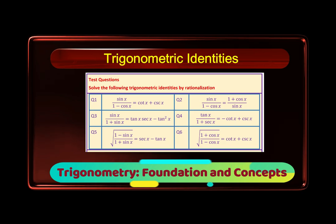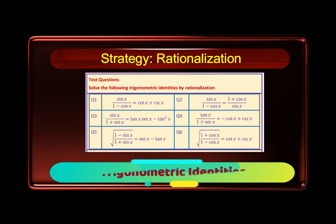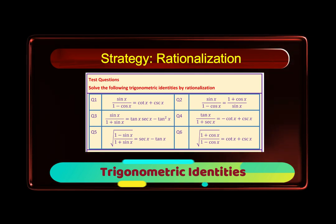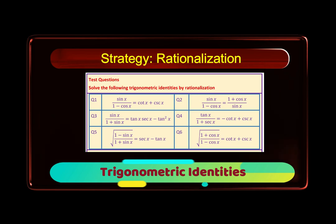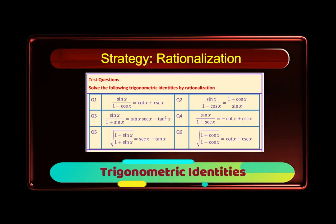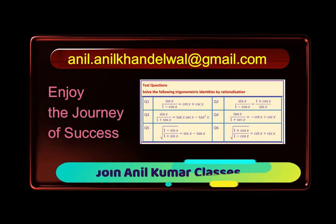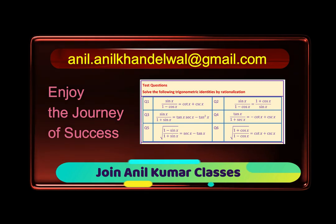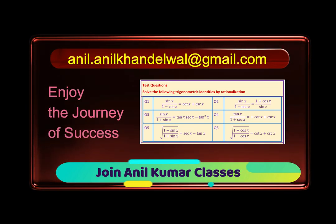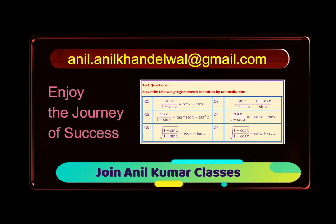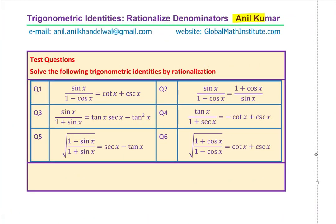Welcome to a very important series on proving trigonometric identities. We will use the strategy of rationalizing the denominator to prove six identities. I hope you will understand when to apply this strategy effectively. I am Anil Kumar, welcome to my YouTube channel and the website Global Math Institute.